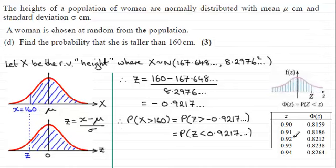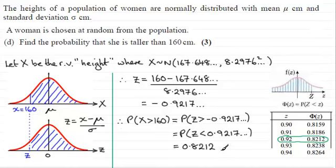Looking this up in the tables — they're not that accurate, but we get 0.92 — the corresponding probability Φ(Z) is 0.8212. So that gives us 0.8212, or rounded to three significant figures, 0.821. That's the way you do it with the tables.